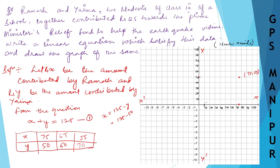Next, x is 65 and y is 60, so it will be here. And the next point is 55 and 70. So 55 here and 70 here. This is the point for 55 and 70.